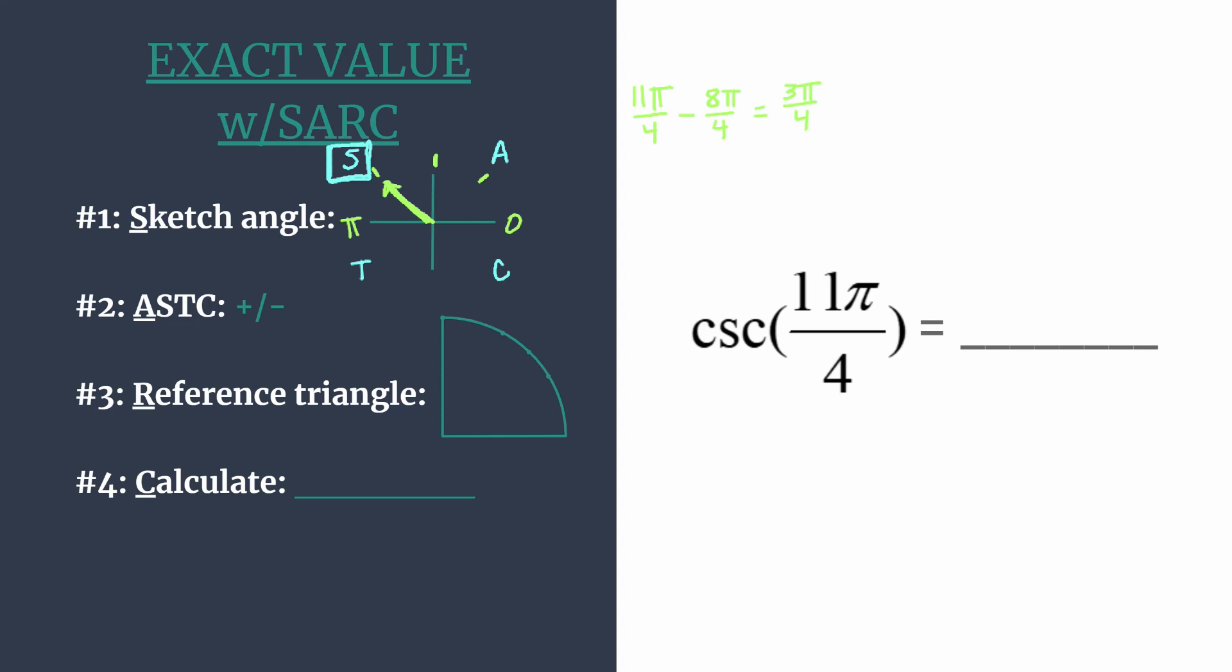Sine and cosecant are positive. Well, we're trying to find the cosecant of 11π/4. So we know our final answer must be positive because our angle is in the second quadrant. So we can go ahead and make a mark of that.